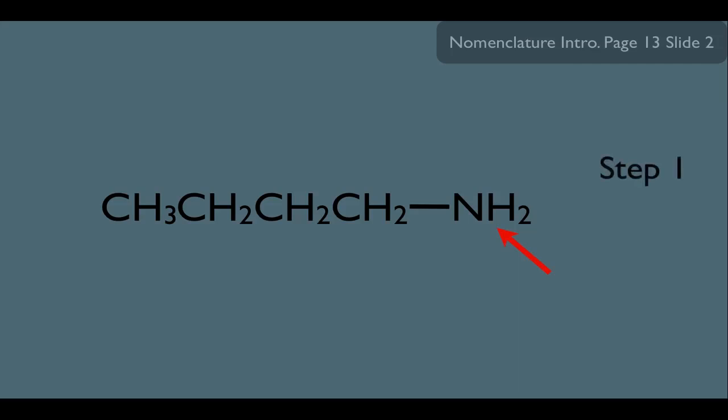So let's start here with step one. We need to find our longest chain that contains the carbon that has the amine. That's kind of like with alcohols, remember? So that means this is the longest chain right here. And since that's four carbons, our parent name so far is butane. But since this is an amine, we put it in the parent name. So this is now called butanamine.